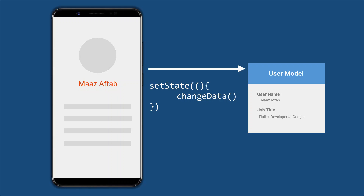Using setState is not a good idea because as the application grows you need to use it so many times manually. Also, the data model is shared between many screens or different parts of the UI, so you need to explicitly pass data from one widget to another manually, and that becomes very difficult as the application grows.